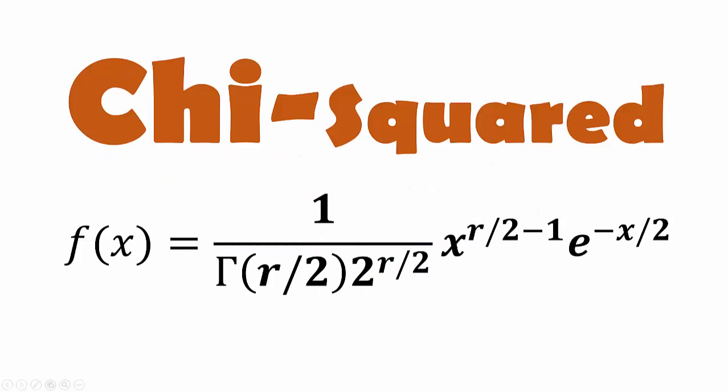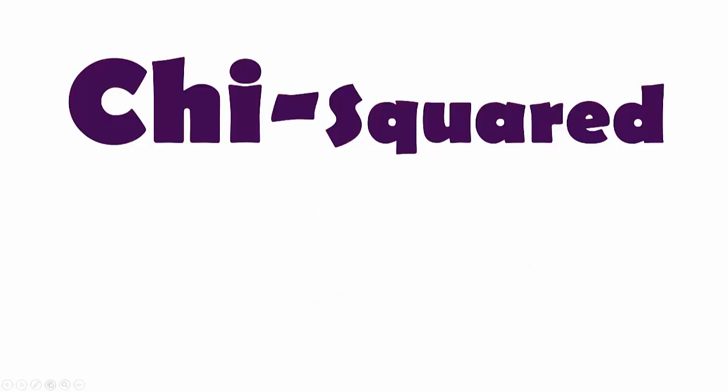As you can see, chi-squared distribution is defined using gamma function. But what is chi-squared distribution used for? And it turns out, the answer is many, many things.